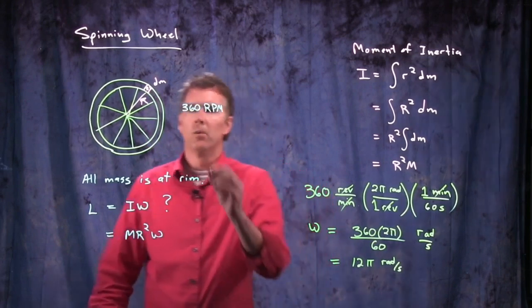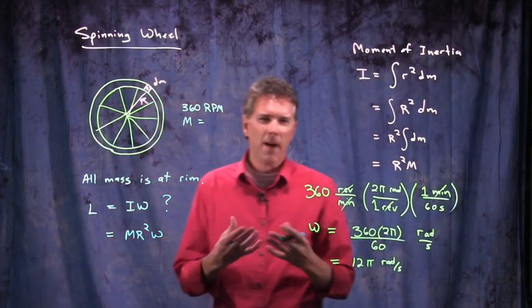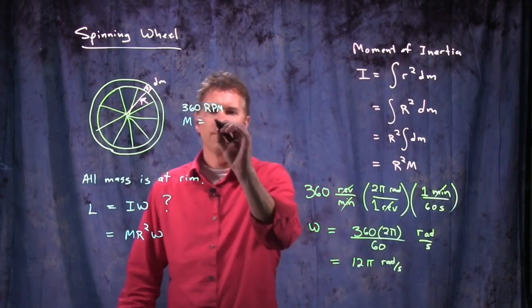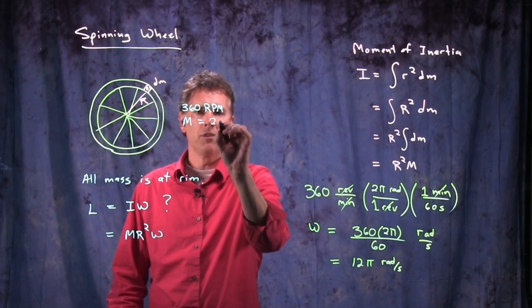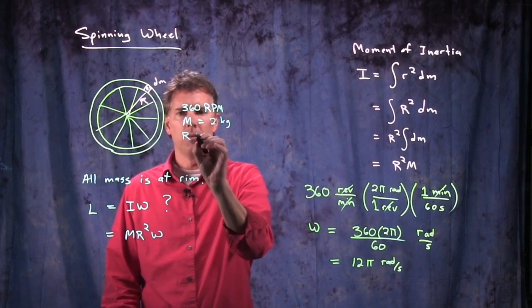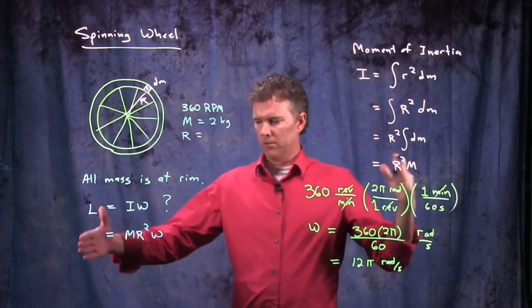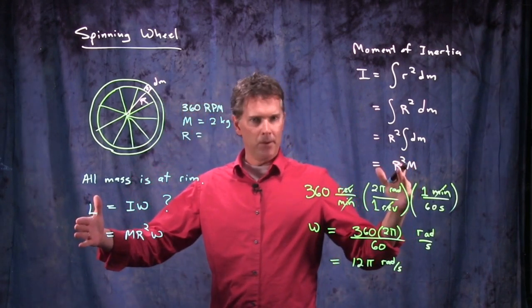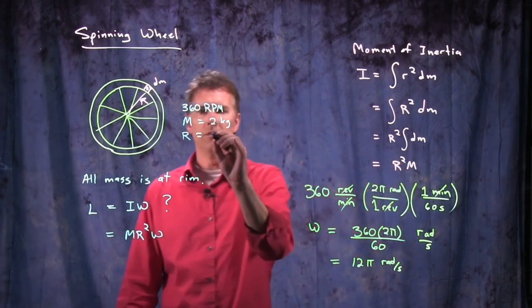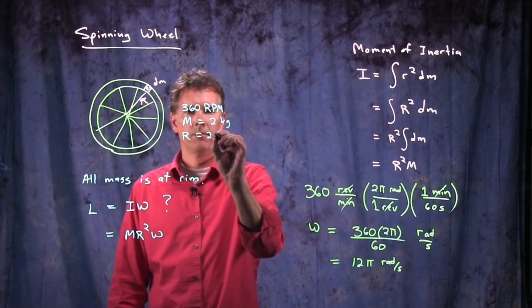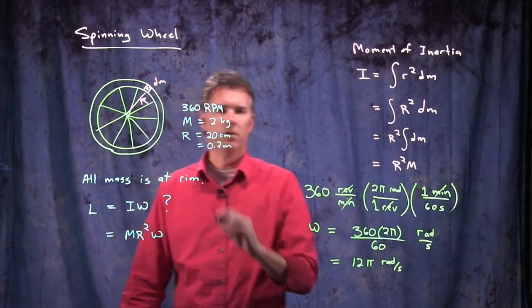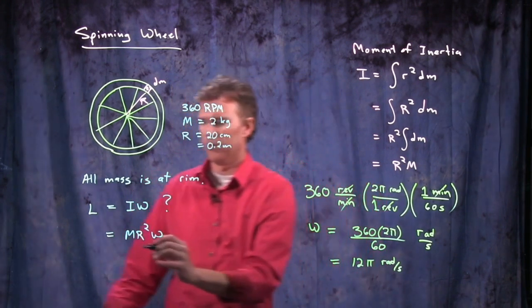So we're going to say that the mass, what's the mass of a bicycle wheel? It's not that heavy. It's maybe one or two kilograms. Let's say it's two kilograms. And let's say that the radius of the wheel, how big is a wheel? It's about like that in diameter. So the radius is probably about 20 centimeters. 20 centimeters is of course 0.2 meters. So let's punch in all these numbers and we'll see what we get.